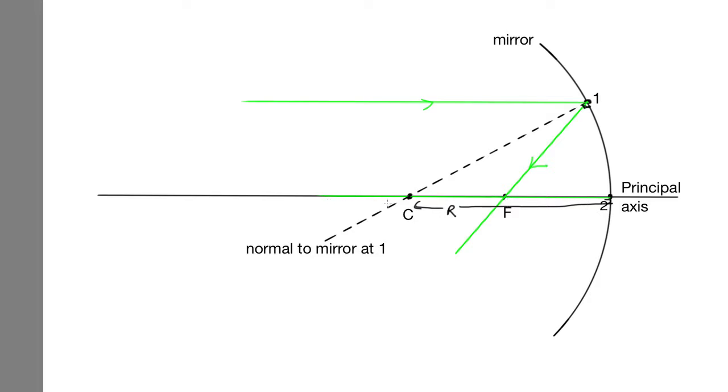And another ray, which is coming in along the principal axis, and because it's travelling along the principal axis, it's reflected back directly along the principal axis.